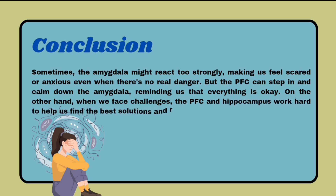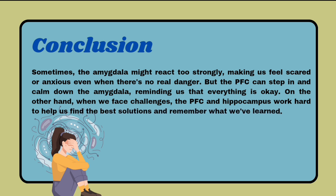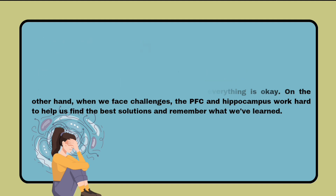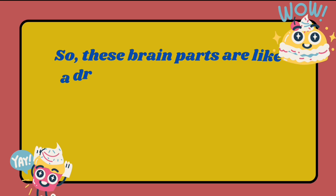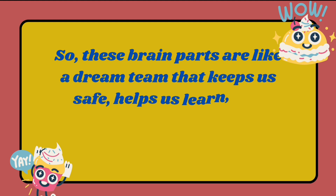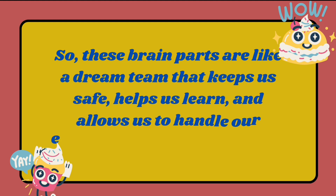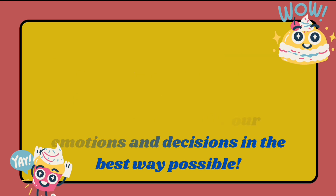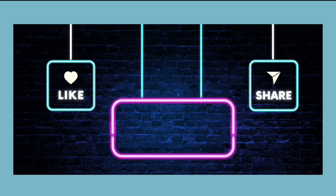When we face challenges, the prefrontal cortex and the hippocampus work hard to help us find the best solutions and remember what we have learned. These brain parts are like a dream team that keeps us safe, helps us learn, and allows us to handle our emotions and decisions in the best way possible. That's all about human brain functions — hope you liked this video, and please subscribe to my channel for more videos.